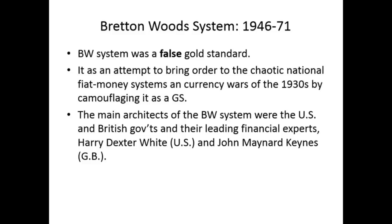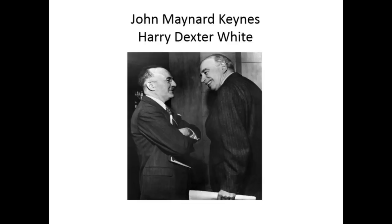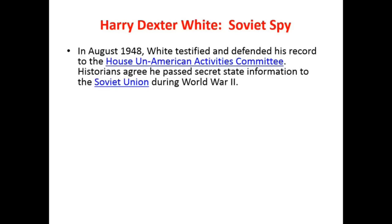Harry Dexter White was the U.S. financial expert that represented the U.S. government at Bretton Woods, and John Maynard Keynes — the father of macroeconomics and of modern depressions and financial crises — was the British representative. They didn't go to a regular convention center; they were living it up in a posh setting in the White Mountains in New Hampshire — it's still standing, still operates, a beautiful hotel. After the Venona files were released by the Soviet government in the 1980s, it turned out that Harry Dexter White was suspected to be a Soviet spy, and it turned out he was. Historians now agree he passed secret information to the Soviet Union during World War II; he died three or six days after his testimony to the House Un-American Activities Committee.